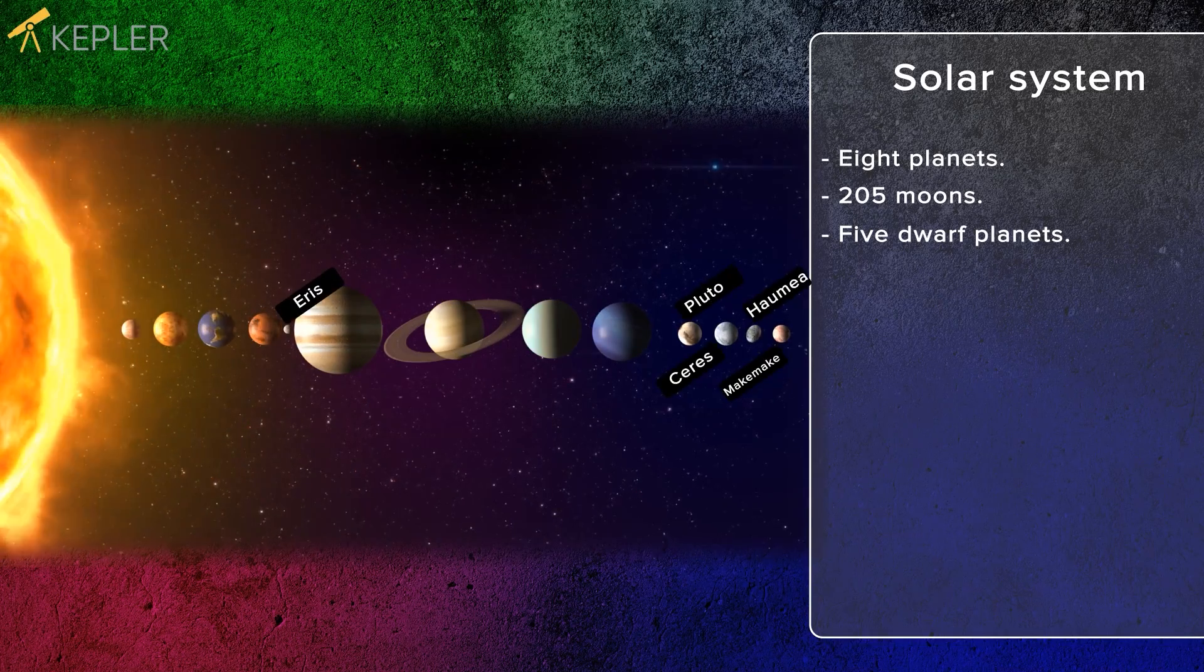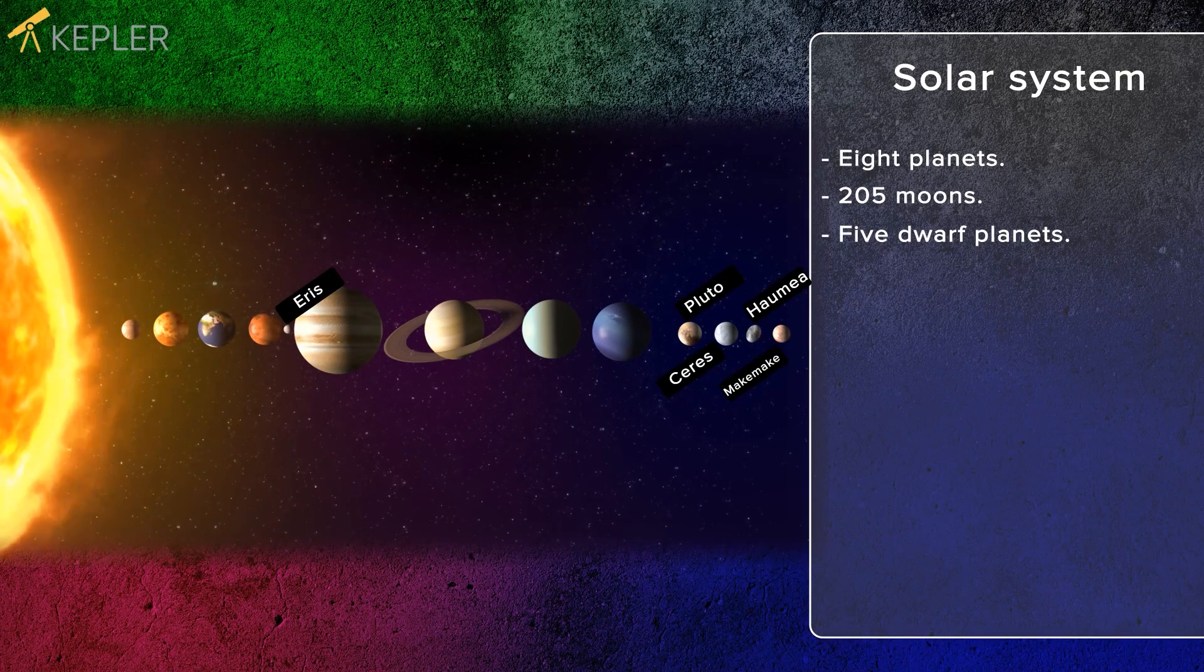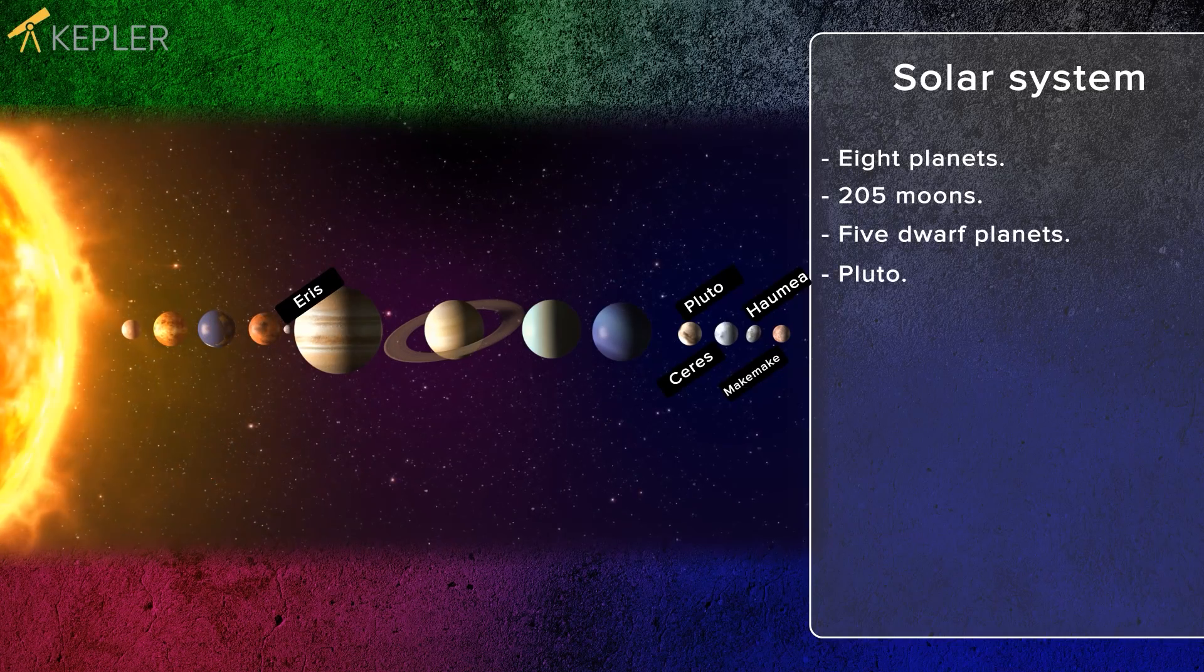Today there are five celestial bodies in our solar system that are defined as dwarf planets, and the most spoken of is Pluto.